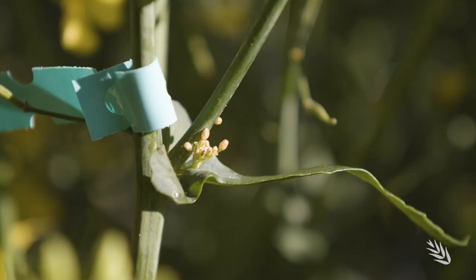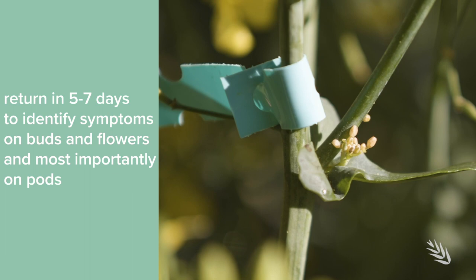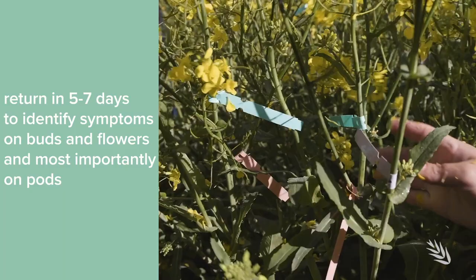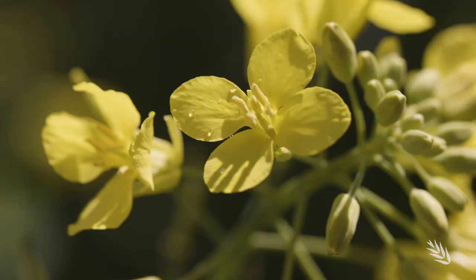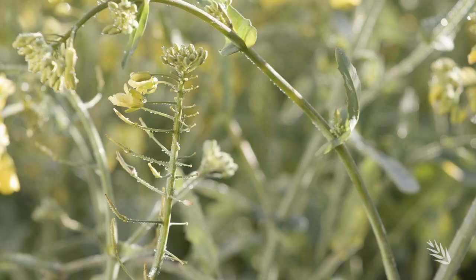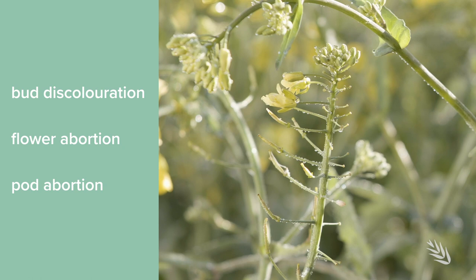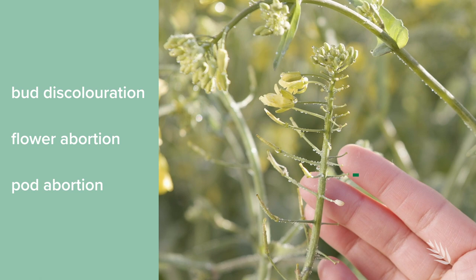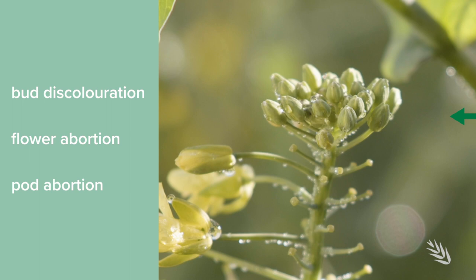Tag a few plants and return after five to seven days of a frost event to look for symptoms. You can clearly see bud discolouration from green to creamy white. In the inflorescence, there is some pod abortion, but new green buds are coming through because canola, being indeterminate, keeps on flowering even after the stress is removed.